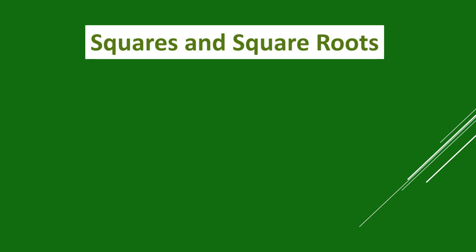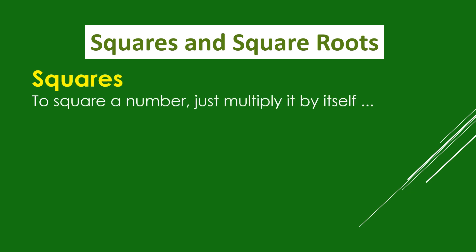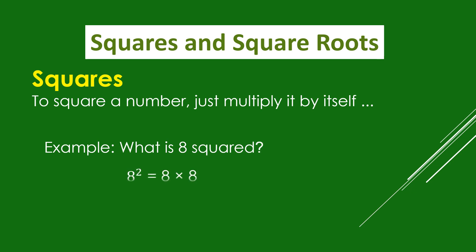Understanding squares and square roots. To square a number, just multiply it by itself. Example: what is 8 squared? 8 squared means 8 times itself, so 8 times 8 is 64.